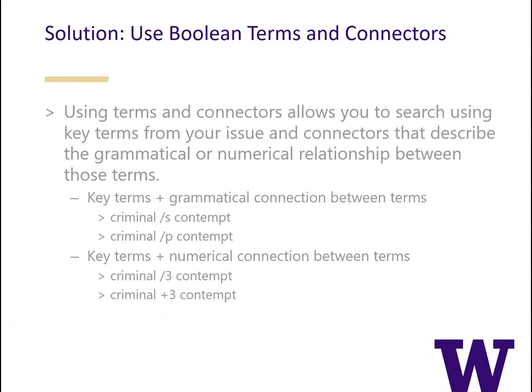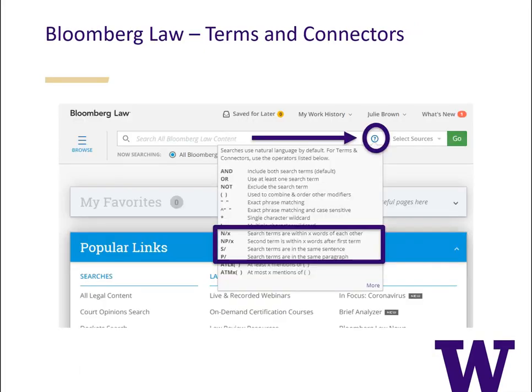Available connectors differ slightly between Bloomberg, Lexis, and Westlaw, but there are ways to find out how to use connectors on each platform. To find out which connectors are available in Bloomberg, from the home screen select the blue question mark to the right of the search box. A drop-down box will appear. Within that box is a shortcut list of all the popular connectors including grammatical and numerical ones. You can also select the more link on the bottom right hand corner to get additional information and examples about using these connectors.